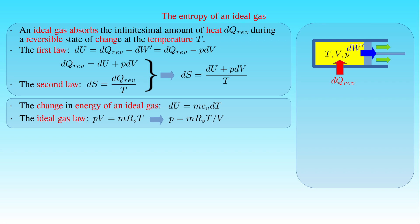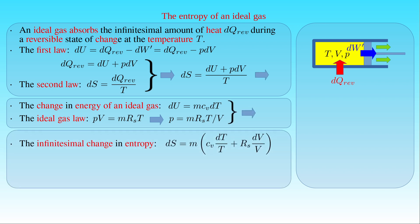Then the infinitesimal change in the entropy S of the ideal gas is equal to its mass M times the sum of the specific heat capacity C_V times the ratio of dT to T, and the specific gas constant R_S times the ratio of dV to V.